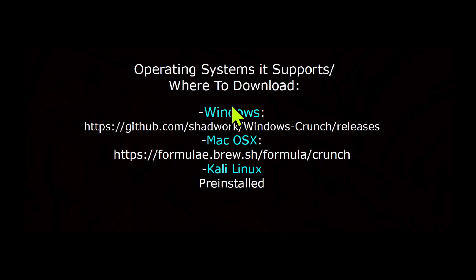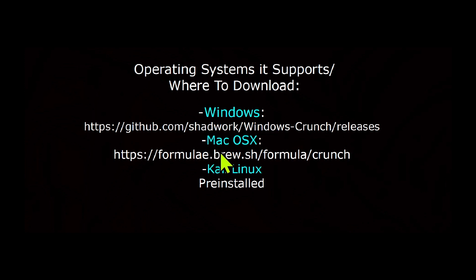Now that you understand some of the fundamentals, if you want to download the Crunch tool you can download it from the provided links — one for Windows and one for macOS. For Mac, you'll need to know how to install the Brew package manager. On Kali Linux, Crunch is actually pre-installed, so if you have it fully updated you won't need to install anything separately.